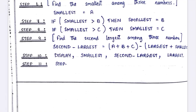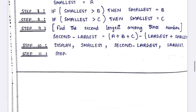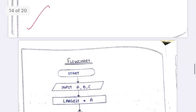Step 9 is finding the second largest among the three numbers. The formula is: second largest equals a plus b plus c — the sum of the three input numbers — minus the largest and minus the smallest. Whatever answer you get is the second largest. Next, we are going to display the smallest, second largest, and largest. The last step is stop.